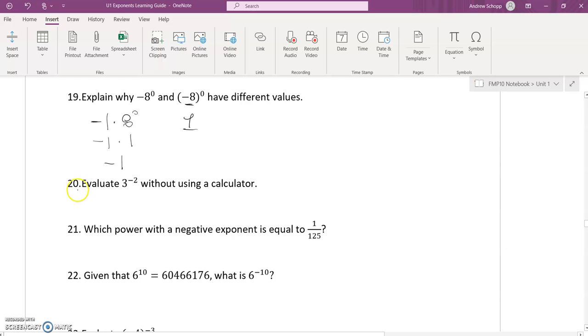For question 20, evaluate 3^-2 without using a calculator. I can rewrite this as 1 over 3 squared, and I know that 3 squared is 9. So if I can rewrite this power and change it from a negative exponent to a positive exponent, I can then evaluate it more easily and understand what it's representing.